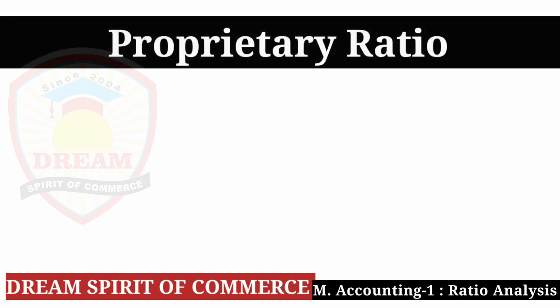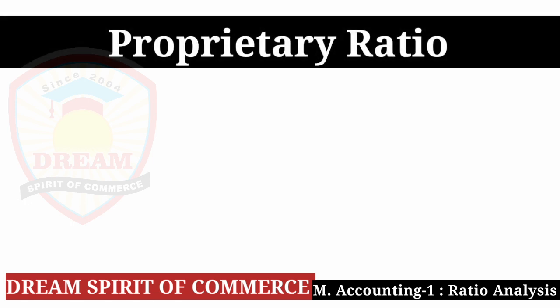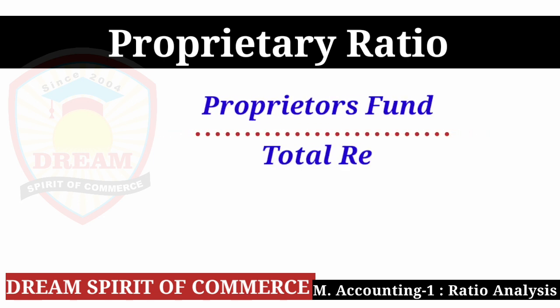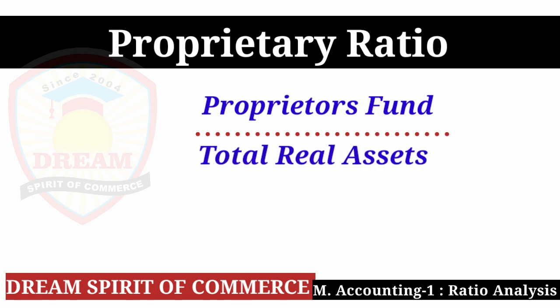Now Proprietary Ratio: Proprietary Ratio equals Proprietors Fund divided by Total Real Assets multiplied by 100. To find Total Real Assets, take the full total of the asset side of the balance sheet and minus Fictitious Assets — the resulting amount is Total Real Assets.